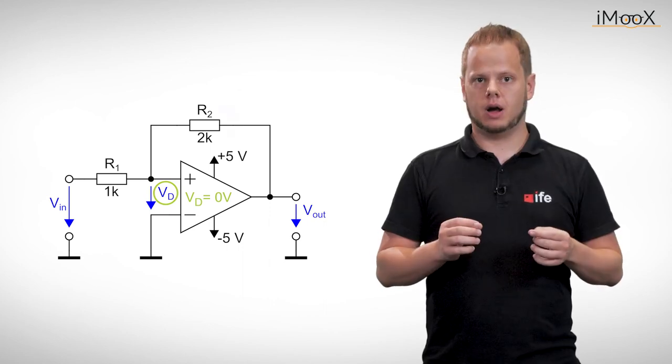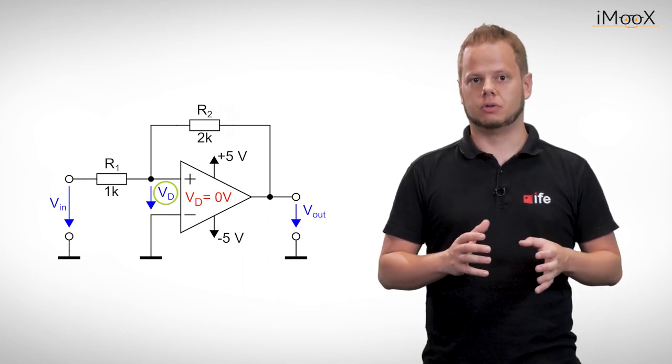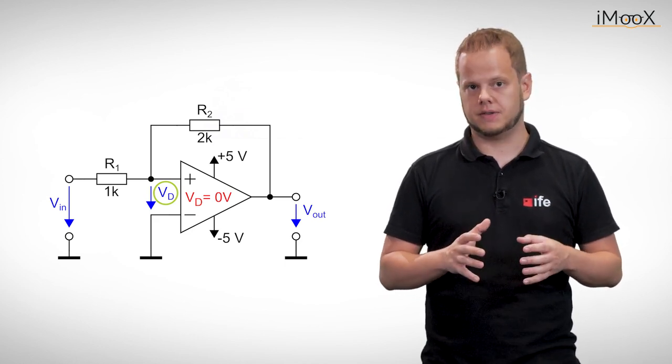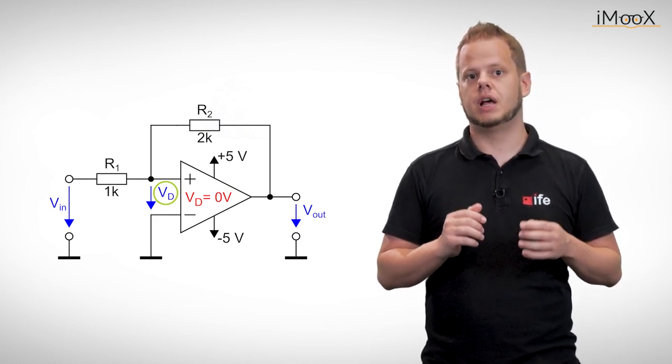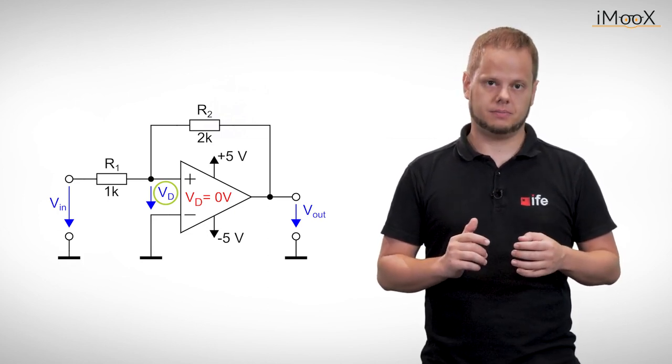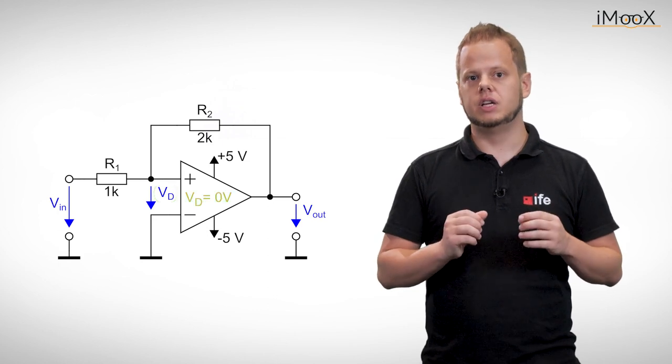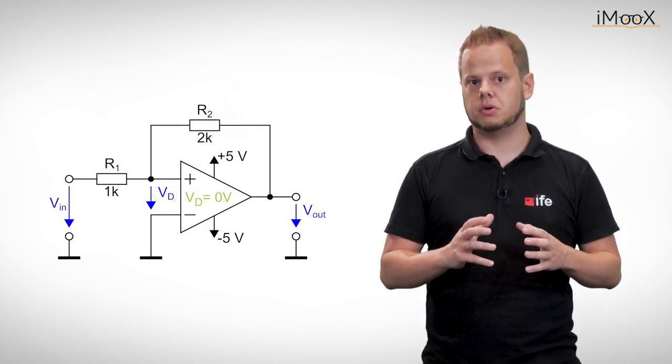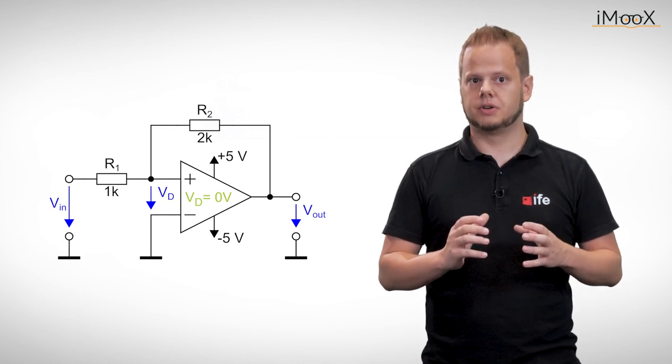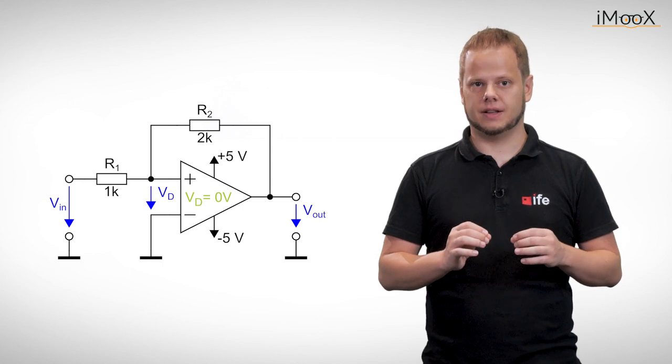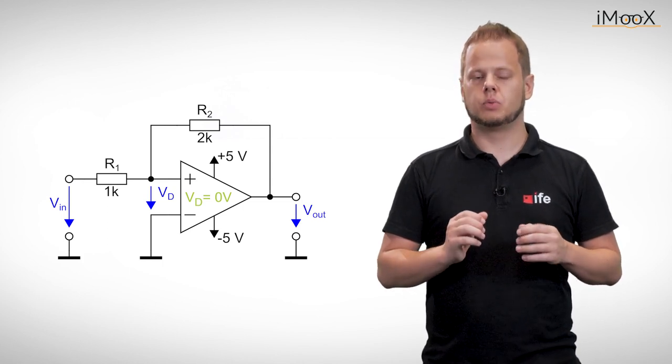Be aware that this Vd equals 0 volts is in no way related to our previous rules for negative feedback circuits. It just happens to be the exact same requirement to determine the trigger levels. While Vd equals 0 volts is true for ideal negative feedback circuits all the time, a Schmitt trigger shows Vd equals 0 volts only in the instant before switching. So be careful there.